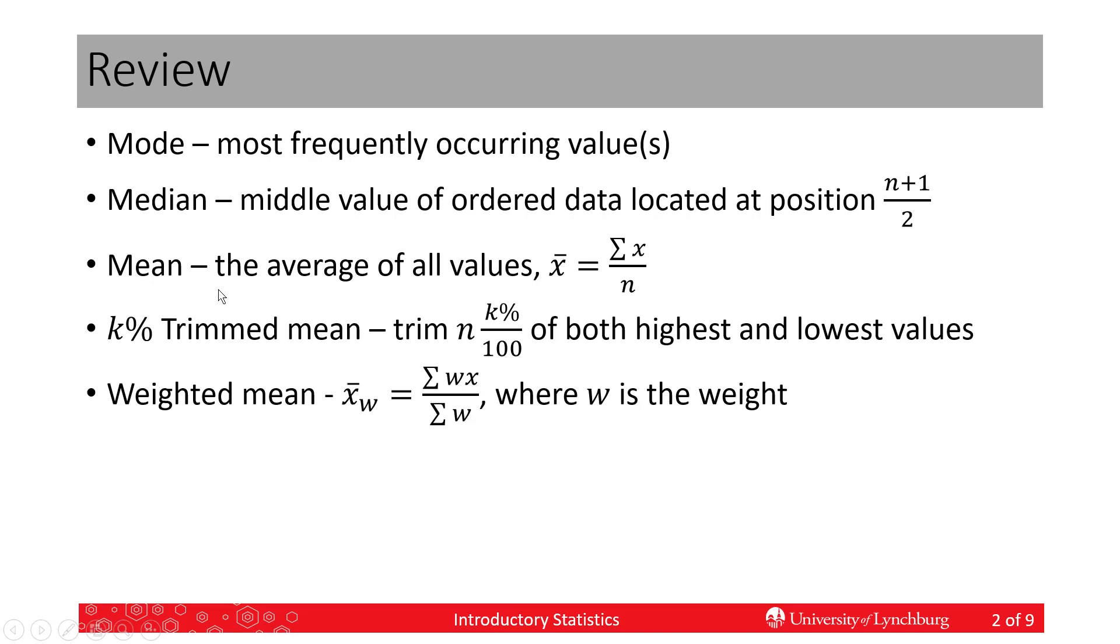The average or mean of all the values is simply the average. We take all the values, add them up, divide by how many we have. Here's the formula: sum the X's, our individual values, and divide by N, which is how many we have.